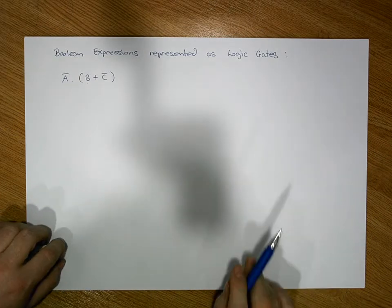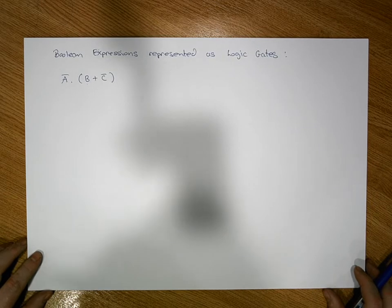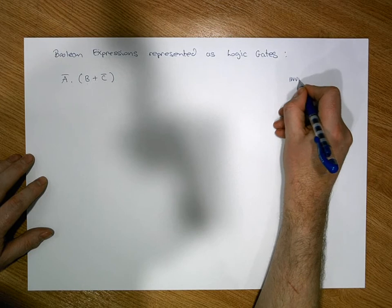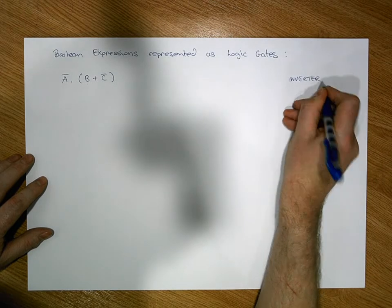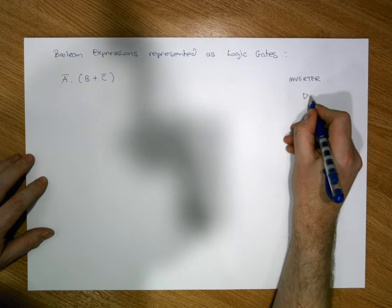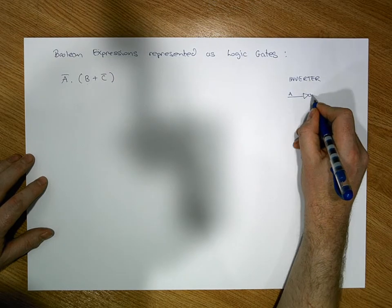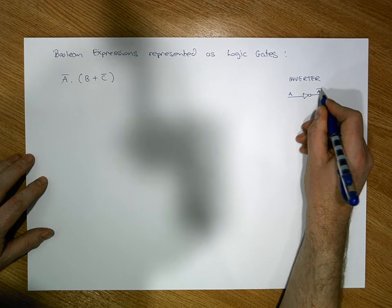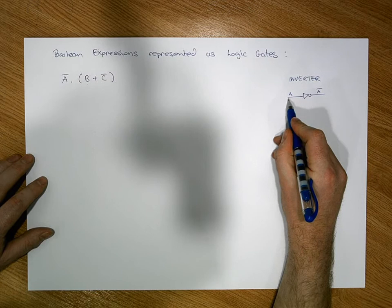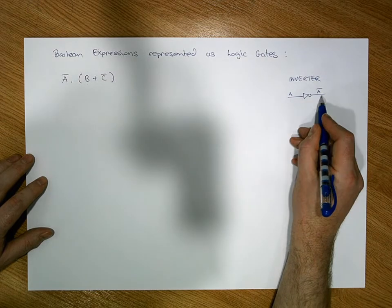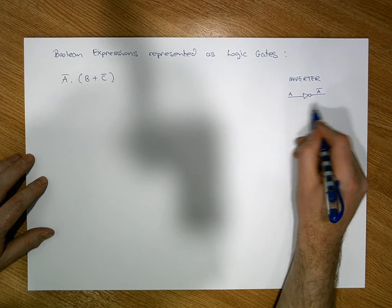First of all, let's look at the schematics for each of our gates. An inverter is represented by a triangle and a little circle. It takes a single input A and gives us the inverted value of A. If A is zero, we'll get out one. If A is one, we'll get out zero. This is the schematic for the inverter logic gate.